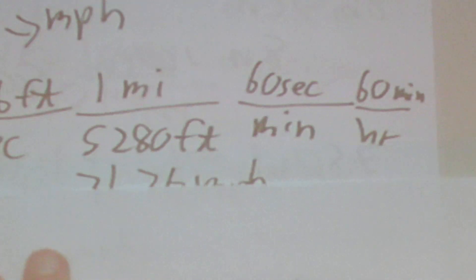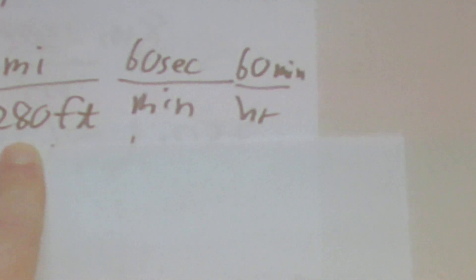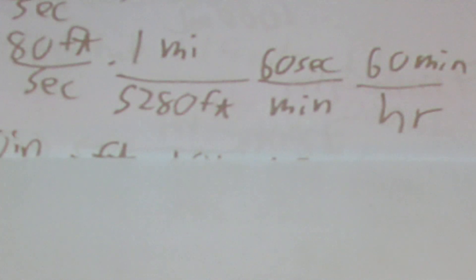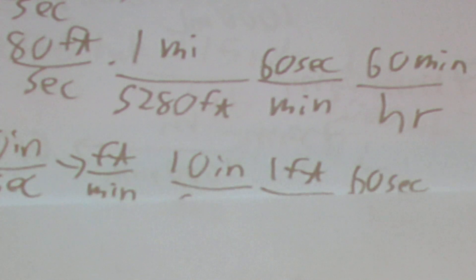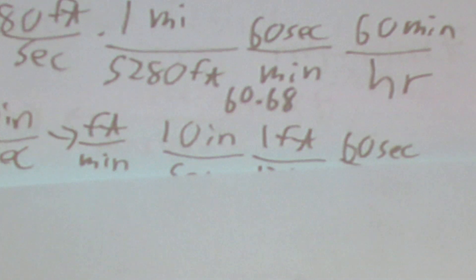Let's say we have 46 feet per second and need to go to miles per hour. We set it up with 46 feet per second, 1 mile over 5,280 feet, 60 seconds per minute, and 60 minutes per hour. When we do all the multiplication we get 31.36 miles per hour. Then with 80 feet per second, the same setup gives us 60.68 miles per hour.